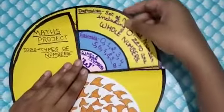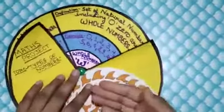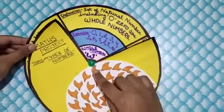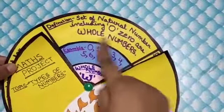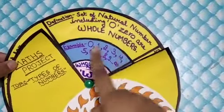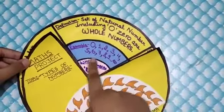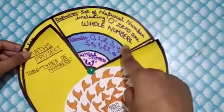Then next, whole numbers. Its sign is W and the definition of it is the set of natural numbers including 0 are whole numbers. Example: 0, 1, 2, 3 till infinity.